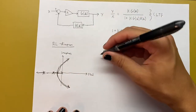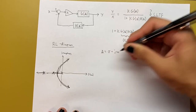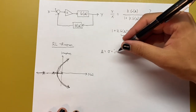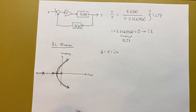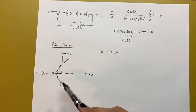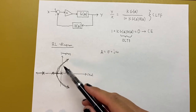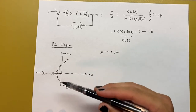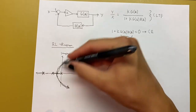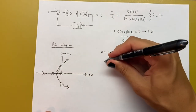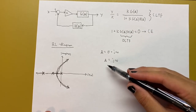Those poles can each be written in the form s equals sigma plus j omega, where sigma is the real part and omega is the imaginary part, and j is the imaginary number. Another thing we know from system analysis is that if the poles are in the right half plane — meaning they have a positive real part — then the system is going to be unstable. On the root locus diagram, we see that where the system crosses the imaginary axis, that's where s equals j omega, and that's going to be the important point where the system goes unstable.